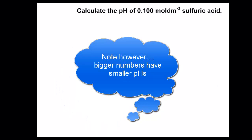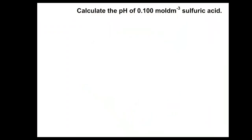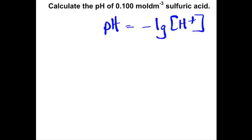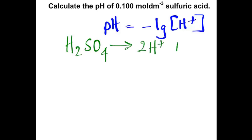Let's try a few calculations working out the pH of strong acids. Remember that strong acids like sulfuric acid fully dissociate. What's the pH of a solution of sulfuric acid at concentration 0.100 mole per cubic decimetre? You'll first have to work out the concentration of hydrogen ions. Sulfuric acid fully dissociates to produce 2 moles of hydrogen ions and a mole of sulfate ions, SO4 2−.